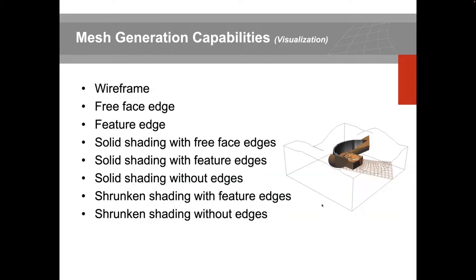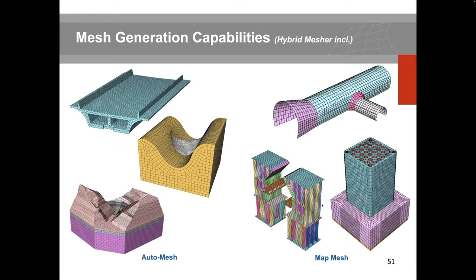At the mesh level, there are different presentation modes: wireframe, feature edge, solid shading views, and shrink view where you can see individual element sizes. There are also different mesh engines enabling structured or unstructured mesh types — for example, auto mesh or map mesh options.